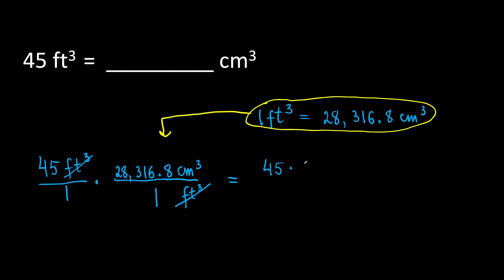45 times 28,316.8 cubic centimeters, and then we multiply the denominators. We have 1 times 1. So, basically, we are multiplying 45 by 28,316.8 and the result will be 1,274,256 cubic centimeters.